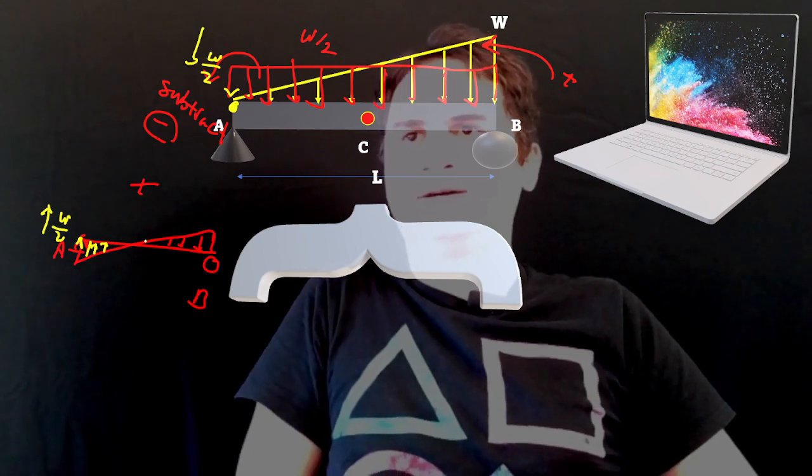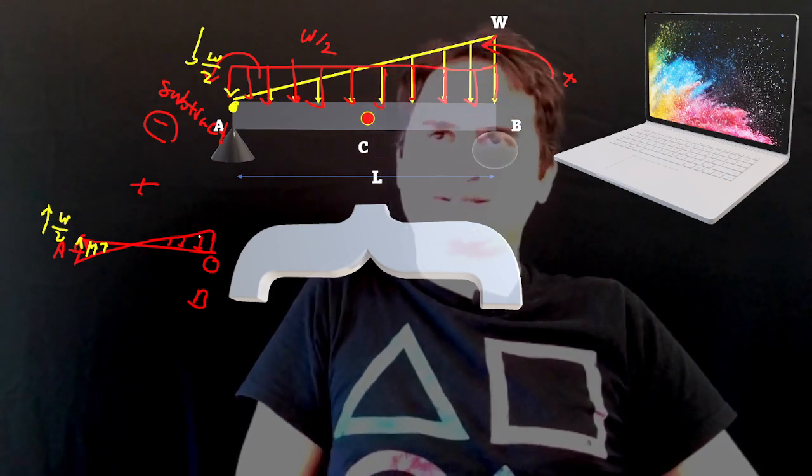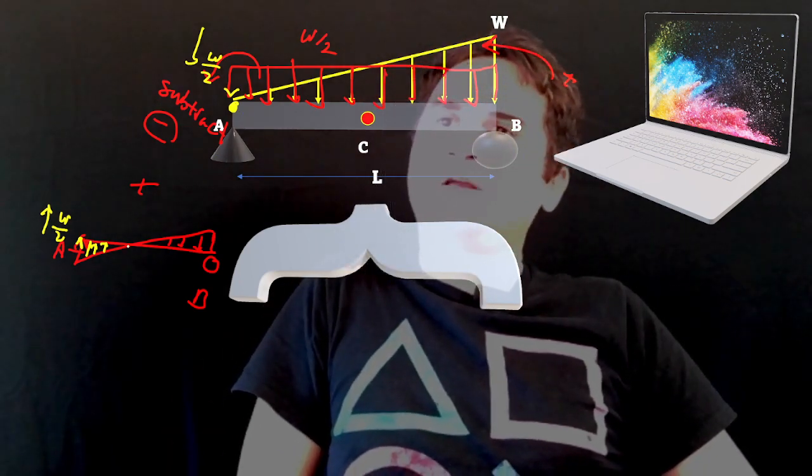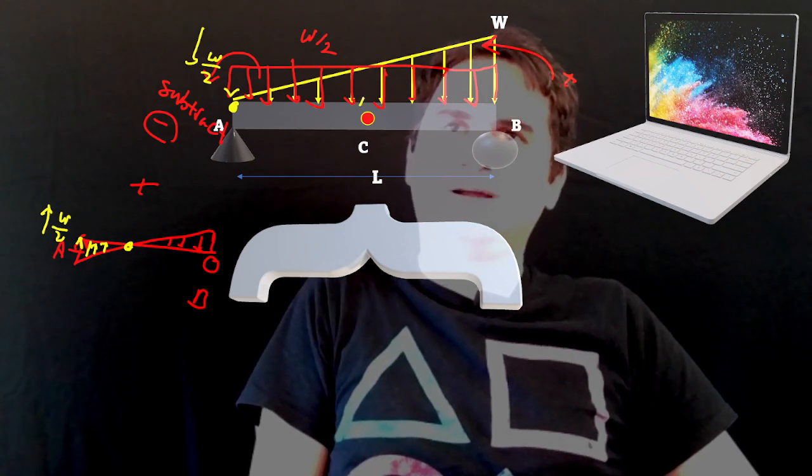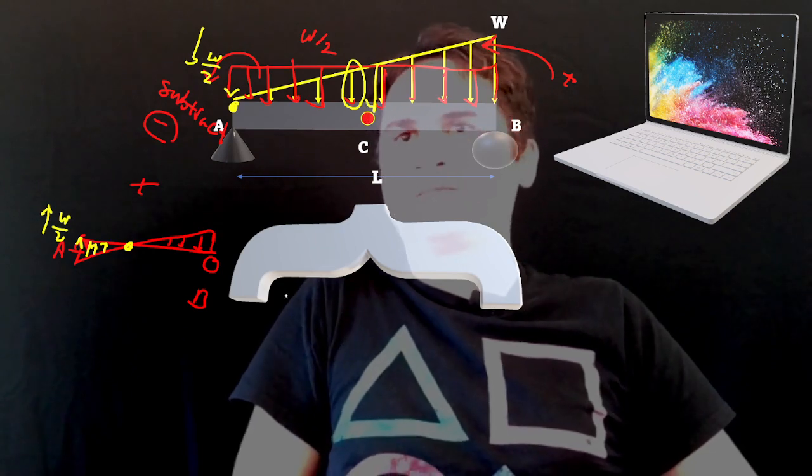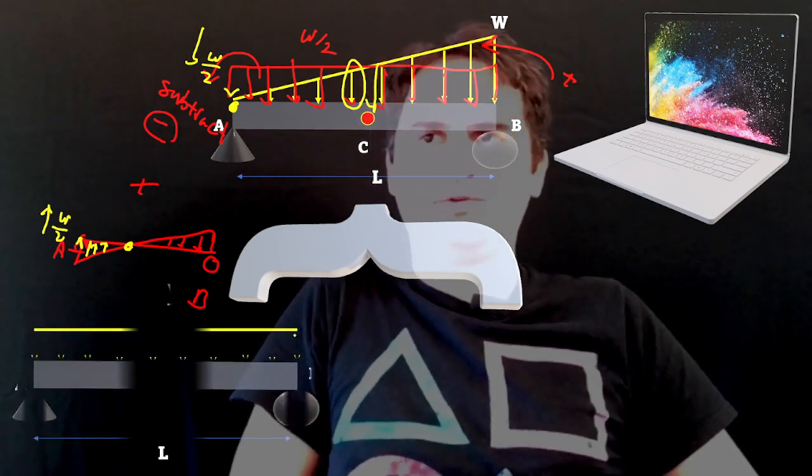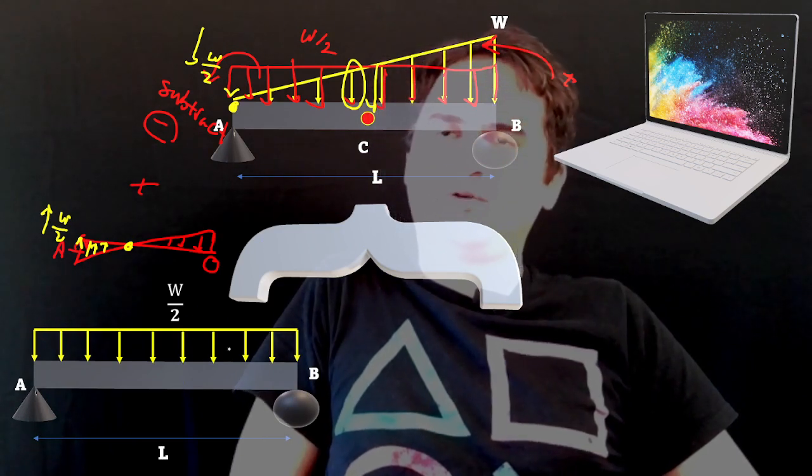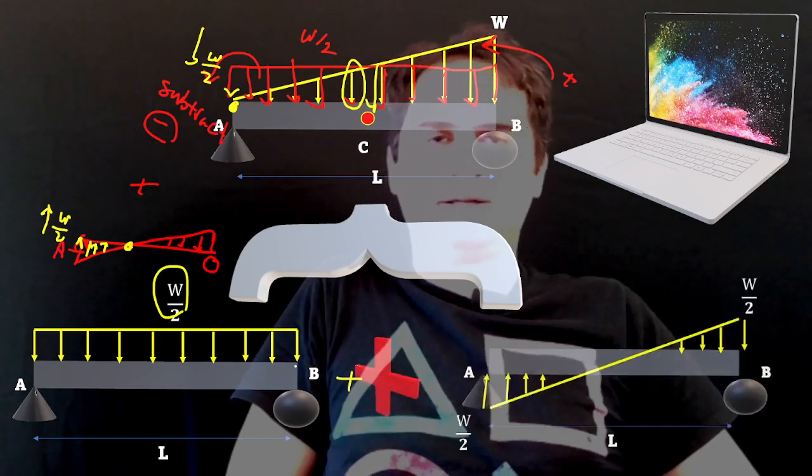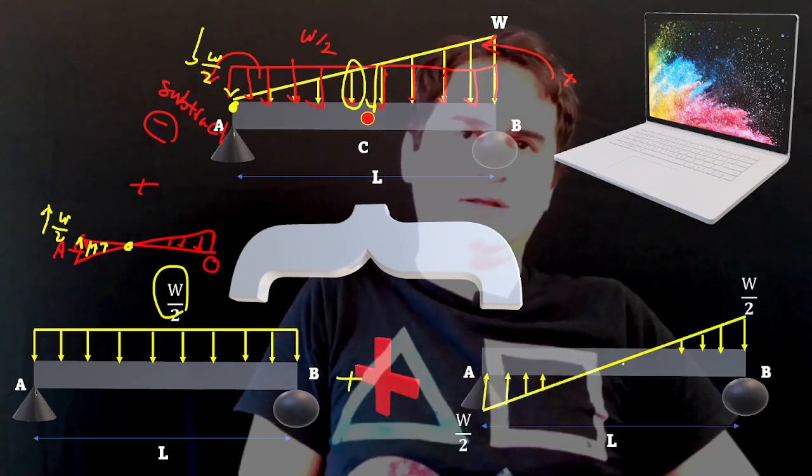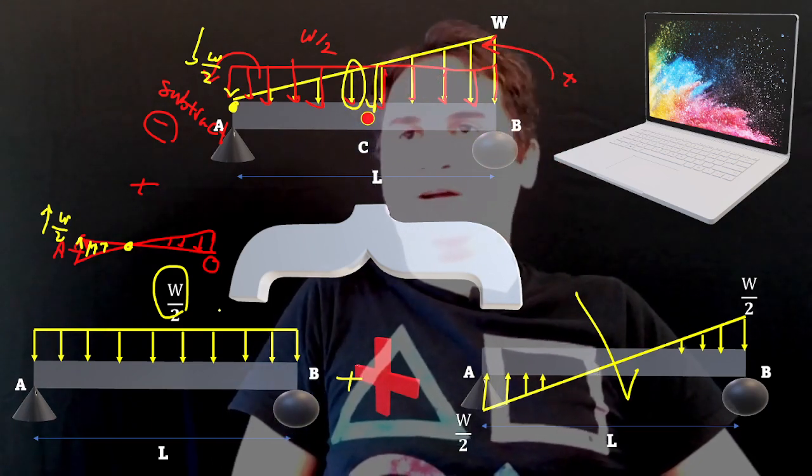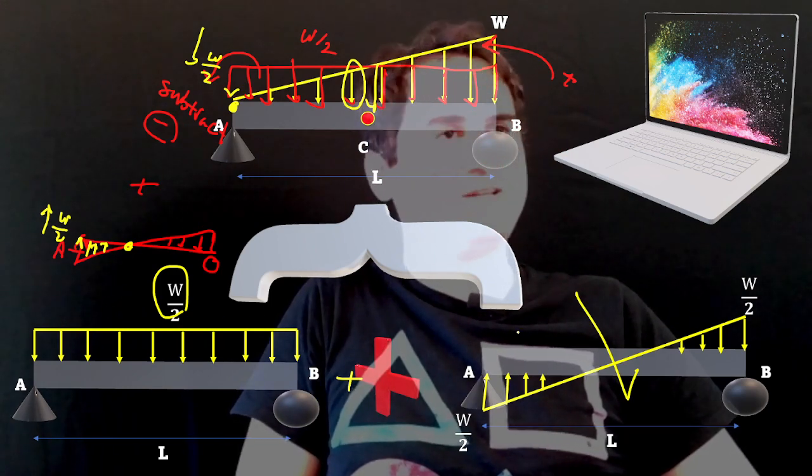At the center it increases from zero to W/2. So we can simply divide the whole shape into a uniformly distributed load of W/2, plus a second beam with this triangular distribution. Once we have this configuration, the solution is pretty simple.